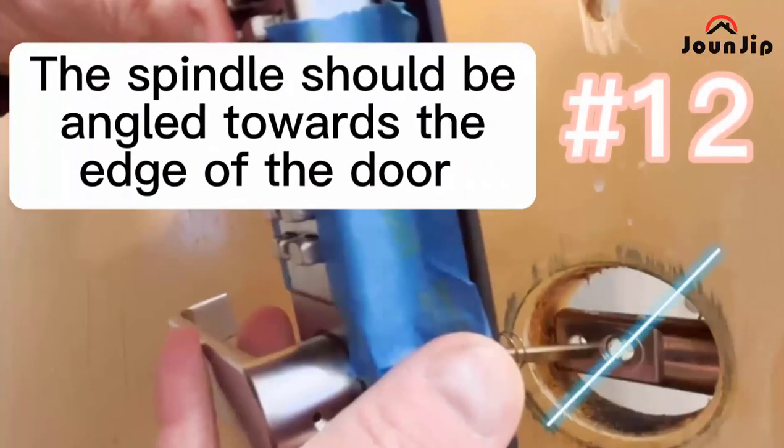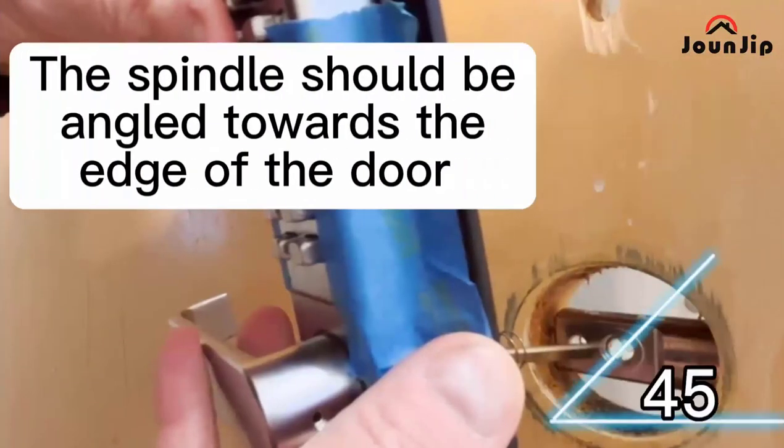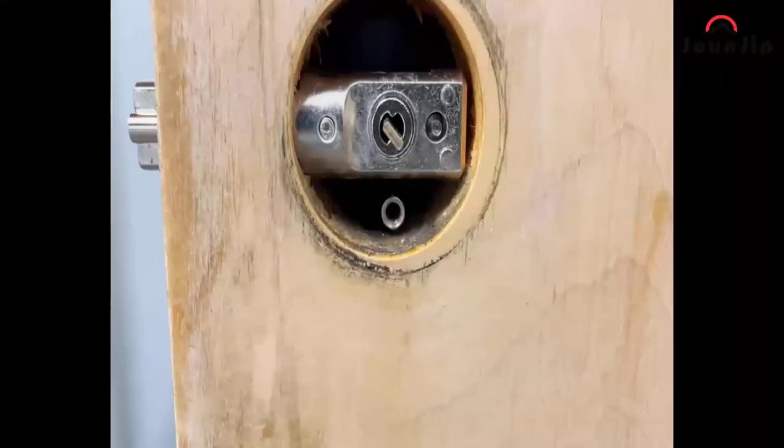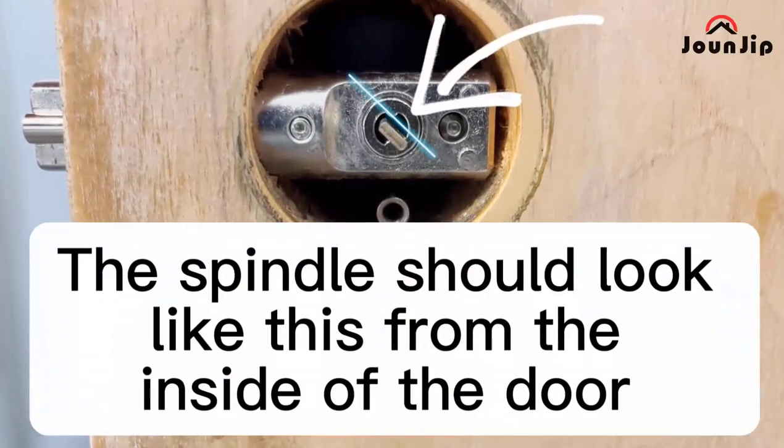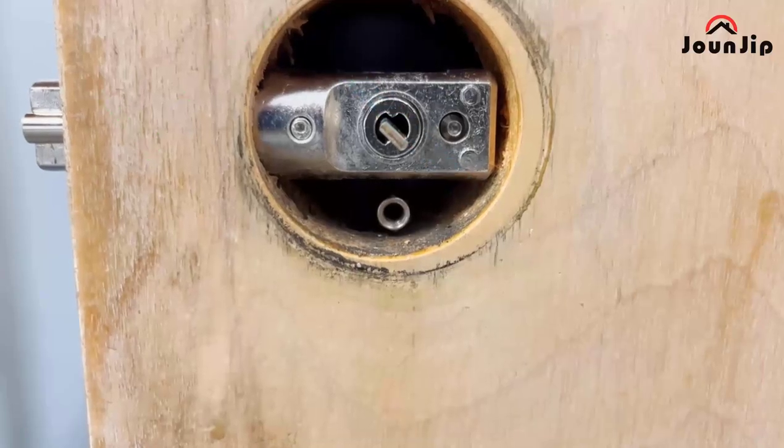Number twelve: the spindle should be angled towards the edge of the door. If you look at the other side of the door, it should look like this.